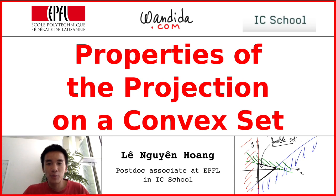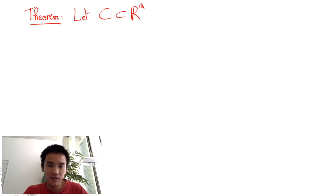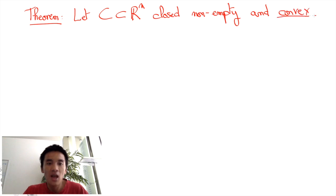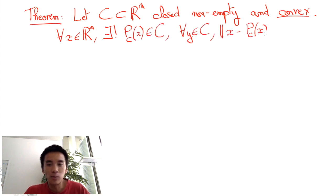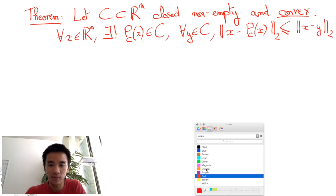In this video, we present three properties of the projection on a convex set. Recall the theorem we proved in a previous video: if C is a finite dimensional closed non-empty convex set, then for any point X, there is a unique point PC of X in C that minimizes the distance between X and a point of C. This projection has several very nice properties.